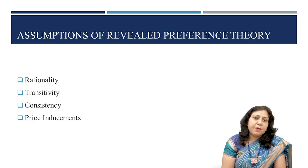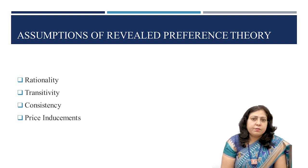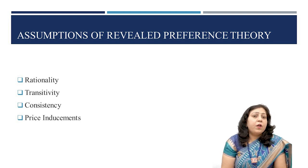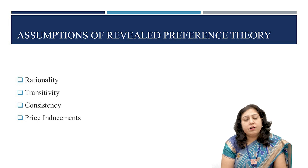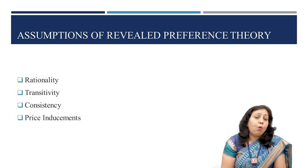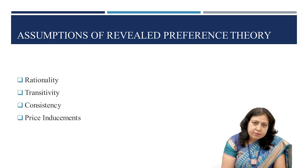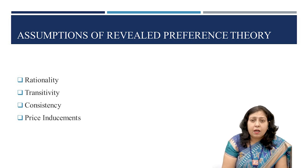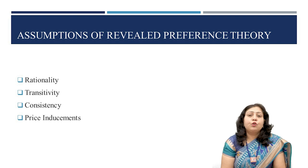Let us study the assumptions of Revealed Preference Theory. The theory is based on certain assumptions, and one of these is rationality. It assumes that consumers are rational. A rational consumer will constantly choose more goods and services in order to maximize utility. As a result, he always purchases goods that provide the most utility first, and then purchases goods that provide the least utility last. In other words, he or she prefers a larger basket of goods to smaller ones.